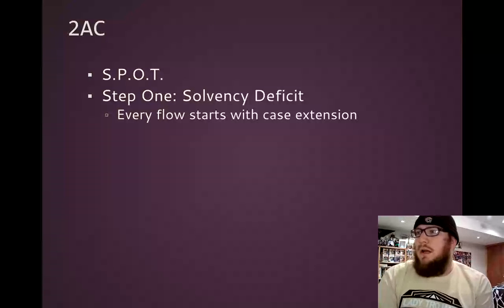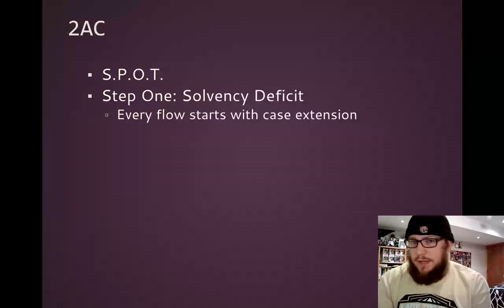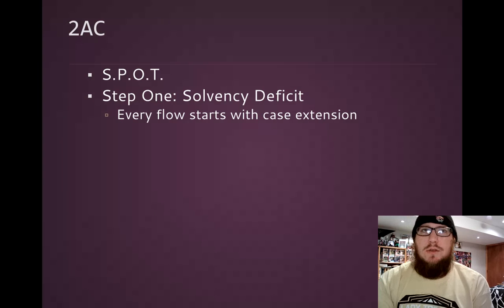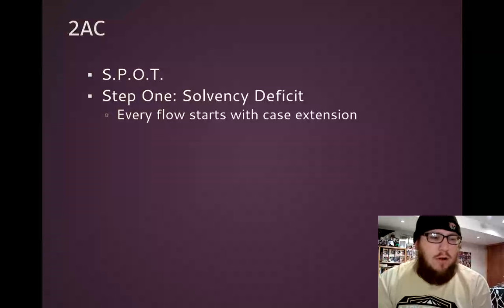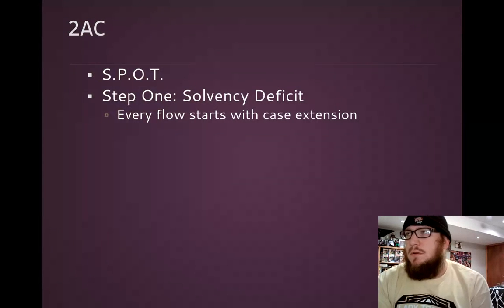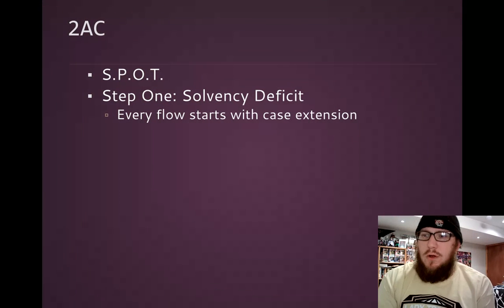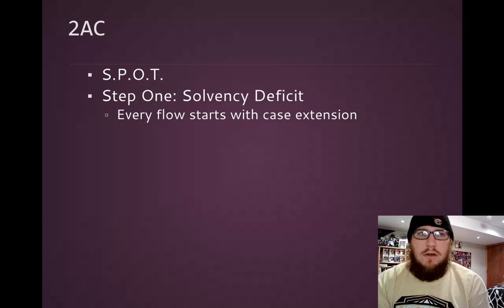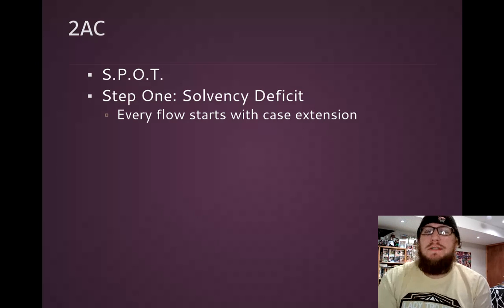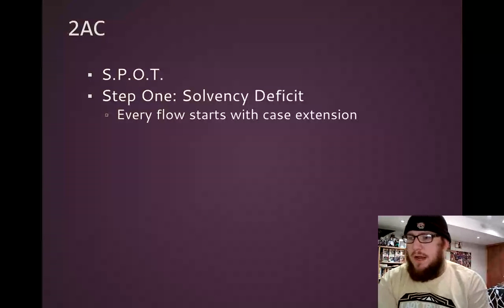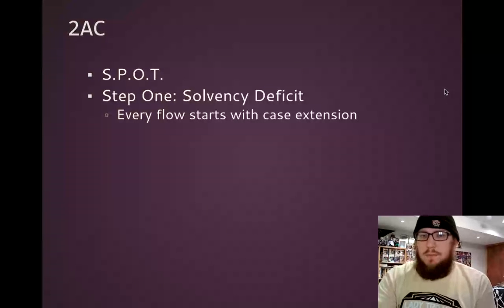A good example against the states counterplan would be with the death penalty affirmative. So when people say the 50 states and relevant territories should abolish the death penalty, you can point out from the solvency evidence in your 1AC — there's the card that cites Texas, how they'll find their own way to keep doing the death penalty in a world where they can create their own regulations. So you can find stuff that says here's why we need federal action. You need something from your affirmative case that explains why the counterplan doesn't solve it.